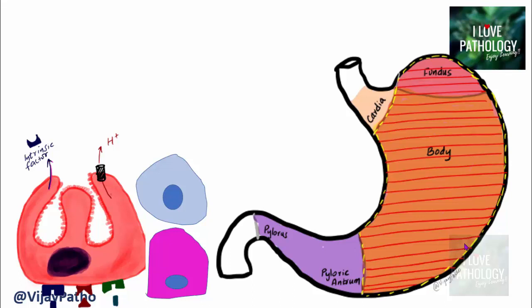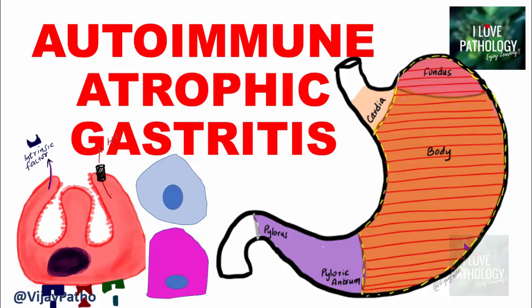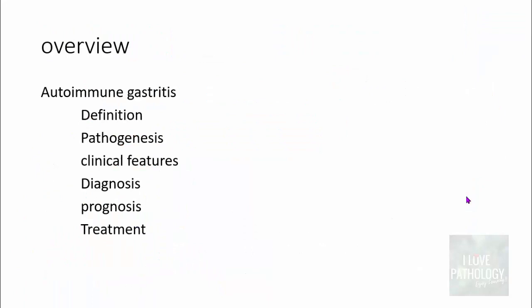Hello everyone. Welcome to yet another short tutorial from Pathology Made Simple at ilopathology.com. The topic I am discussing today is autoimmune atrophic gastritis. We shall discuss this under these various settings: the definition, pathogenesis, clinical features, how to diagnose autoimmune gastritis, and finally understand a bit about the prognosis and treatment of autoimmune gastritis.